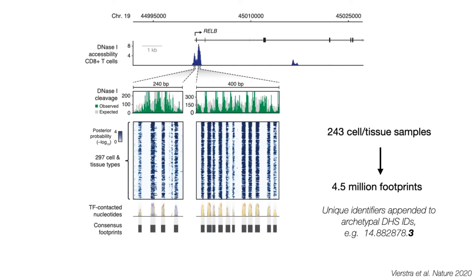And so out of this, one can integrate 243 different cell and tissue contexts into around 4.5 million consensus footprints, and assign also unique identifiers to them that are essentially extensions of the DHS identifiers wherein they occur.